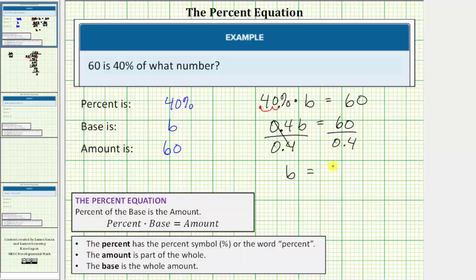So now we know b equals 150, which means 60 is 40% of 150.